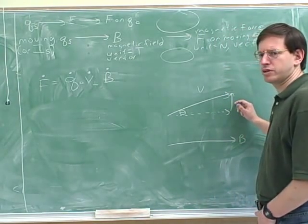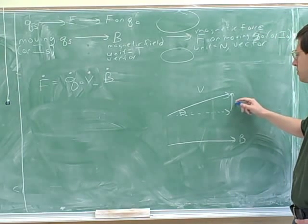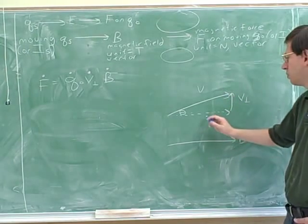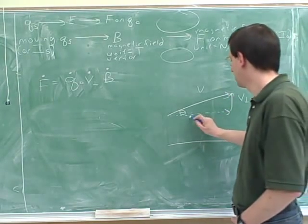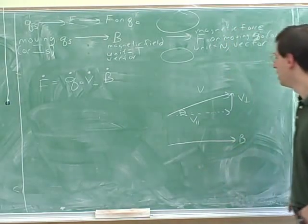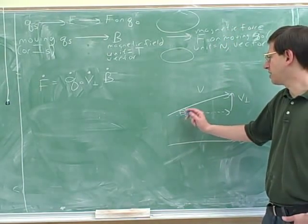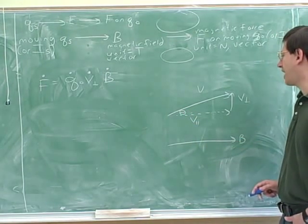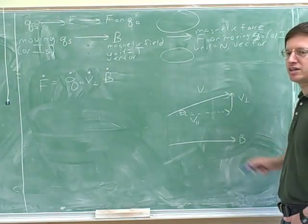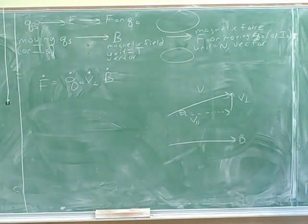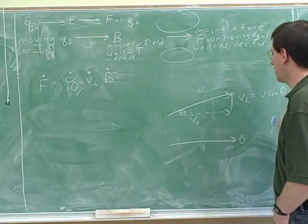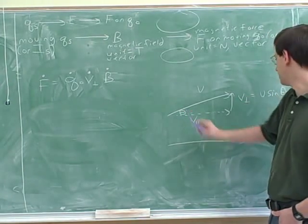What would be a good name for this component? That would be V perpendicular — the component of V that's perpendicular to B. And the other component would be V parallel, which we usually don't care much about in magnetism. Now theta is the angle between V and B. Using trigonometry, V perpendicular equals V sine theta, because V perpendicular is opposite to the angle theta.